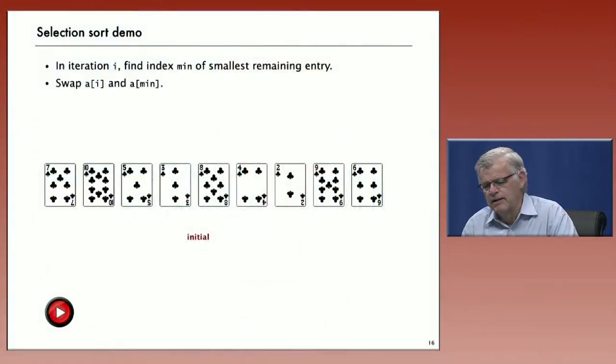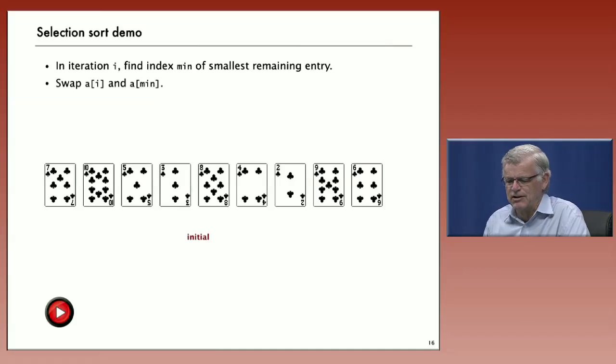The first elementary sorting method that we're going to take a look at is an easy method known as selection sort. The idea of selection sort is to start out with an unsorted array and we'll use these playing cards as an example.